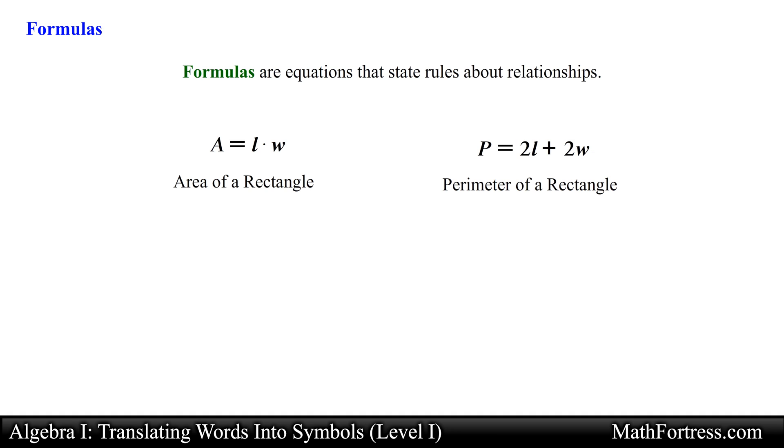Another typical equation that is used in algebra is the distance formula. The distance traveled by an object going at a constant rate for a specific time interval is given by the formula D equals RT. Where D is the distance, R is the rate of the object and T is the time interval the object has been traveling.